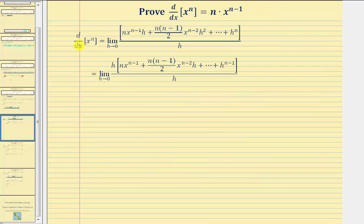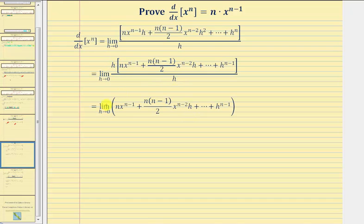This first line is the same line from the previous slide, and the second line is where we factored out one factor of h from the numerator. Notice once we do that, we can simplify this fraction — h divided by h simplifies to one — which gives us the limit as h approaches zero of the sum of these terms.